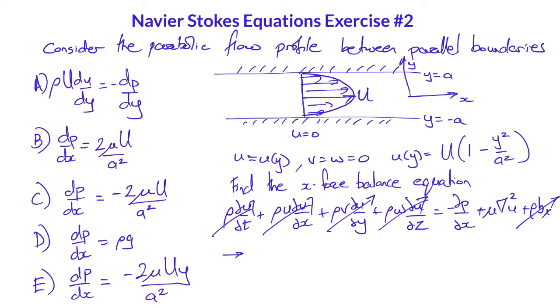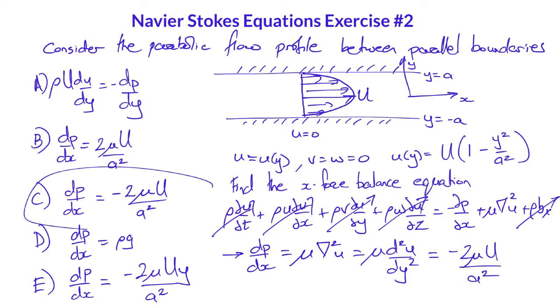Now, all of these terms go to zero because u is only a function of y and v is zero, which simplifies to dp dx equals mu times Laplacian of u, which is just mu times d2u dy squared, which is therefore minus 2 capital U mu over a squared, or choice c.